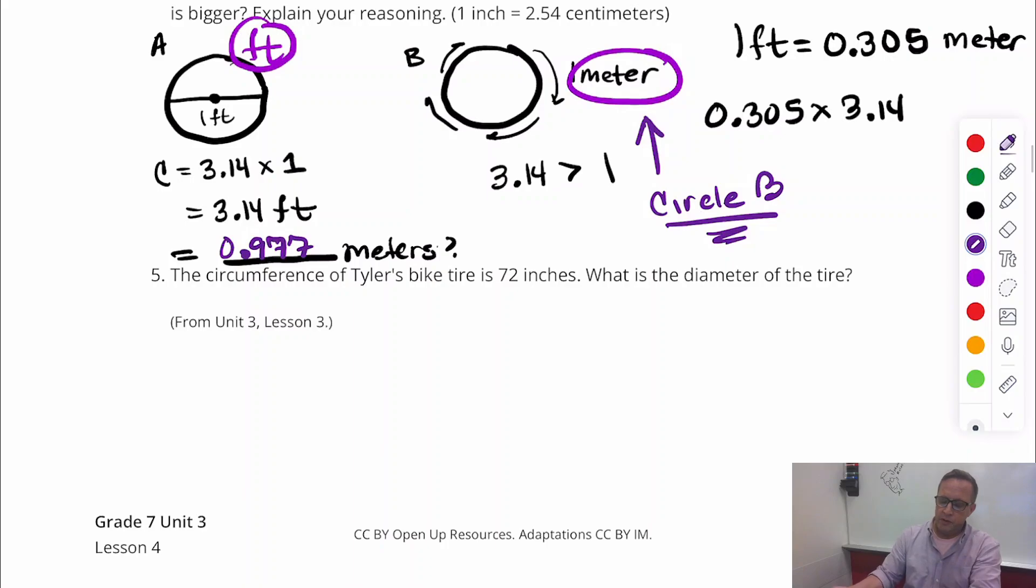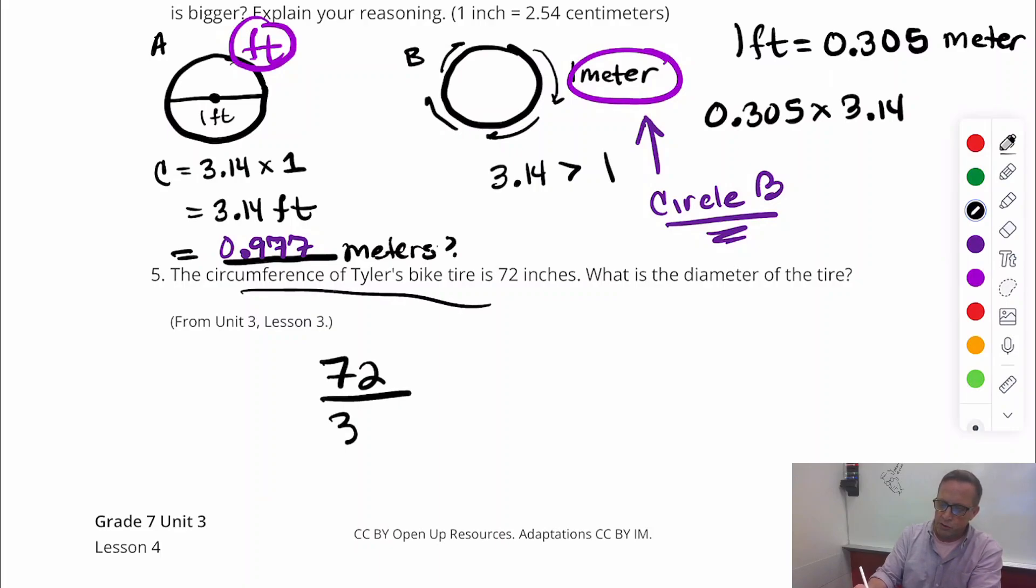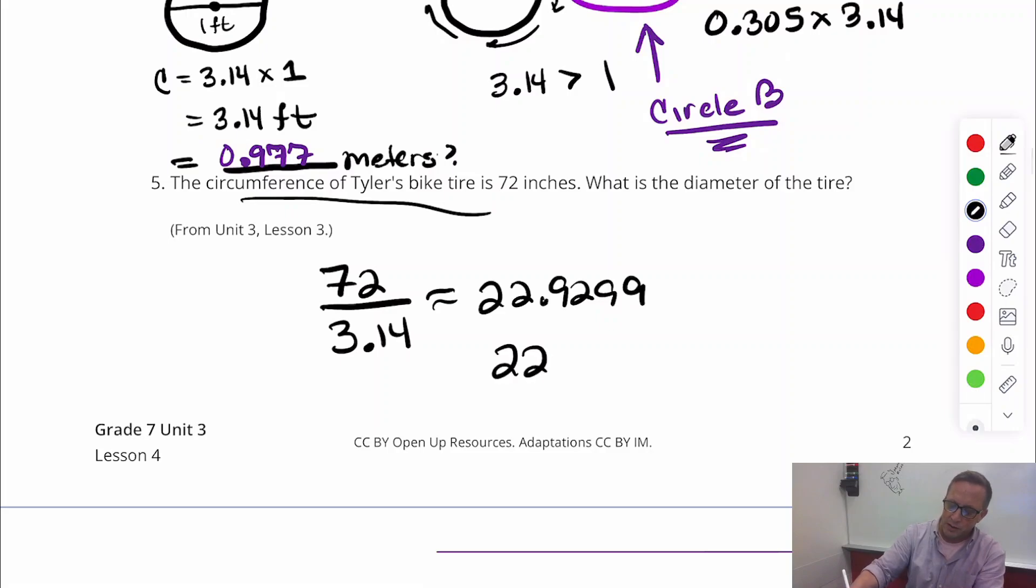I'm being kicked out of this building. I'm here too late. But we've got, on this one, the circumference is 72 inches. So I'm just going to do 72 divided by 3.14 to get the diameter, and I get 22.9 inches.